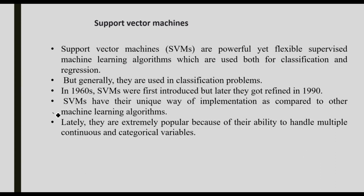This is our machine learning algorithm — for classification, we learn how to classify support vector machines, and we use them for classification purposes. They are extremely popular because of their ability to handle multiple continuous and categorical variables in the dataset. Support vector machine is a very flexible and highly powerful machine learning algorithm.